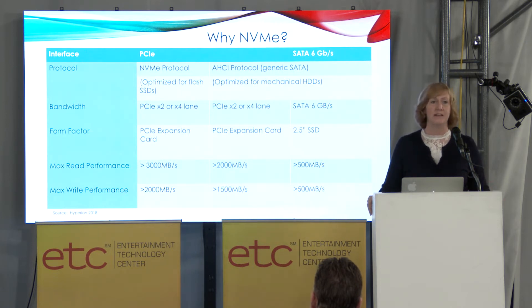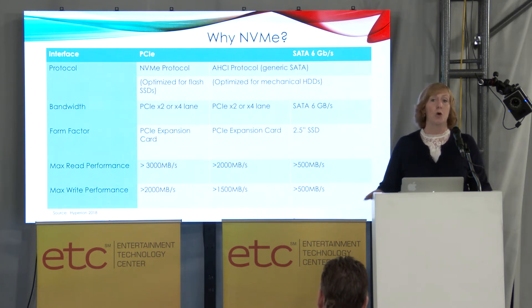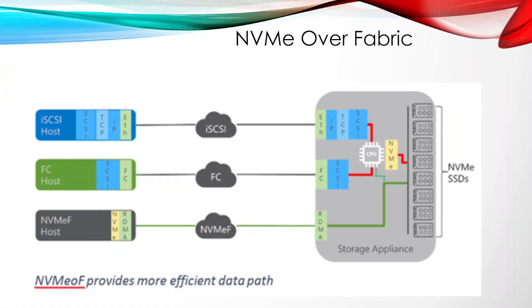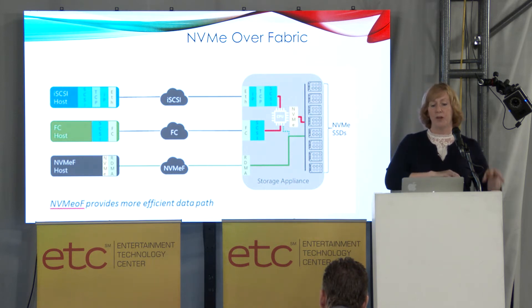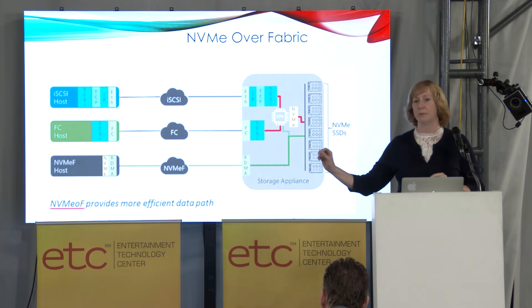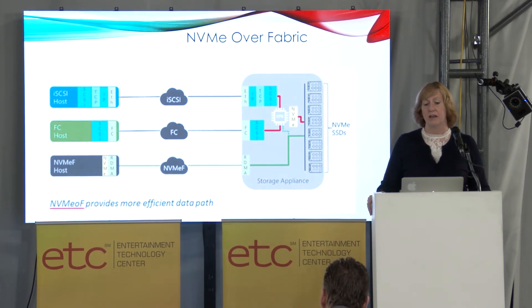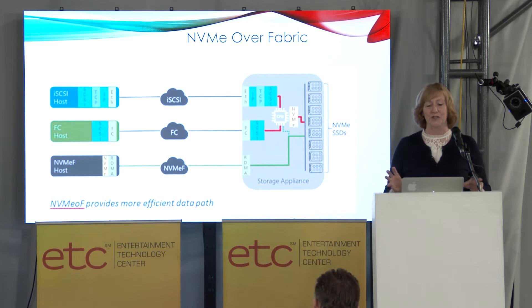NVMe over Fabric takes that really fast protocol that Intel invented and makes it work over a network. It has a second side effect that's actually very important for compute: it's designed as a protocol to avoid using the CPU. We call that RDMA — Remote Direct Memory Access — meaning you write from one side without putting things in a buffer; you actually write it right into the memory or the storage on the other side.